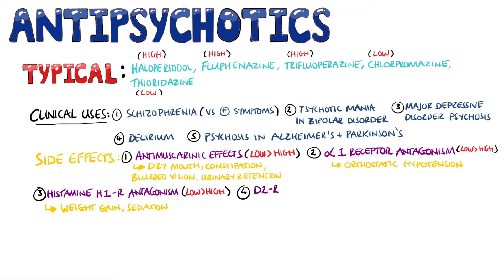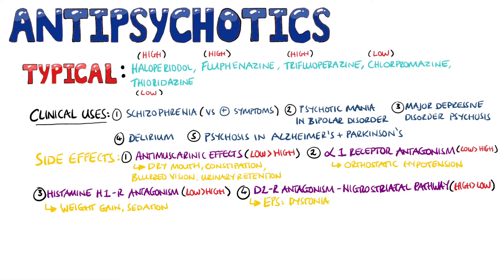From the D2 receptor blocking in the nigrostriatal pathway, we have extrapyramidal symptoms, this time more so in the high potency antipsychotics than in the low ones. These symptoms include dystonia and akathisia, which are typically seen within days; Parkinsonism, which is usually seen within weeks; and over months, they may develop tardive dyskinesia.